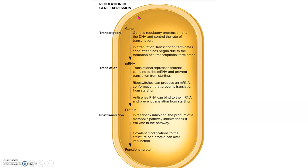We can regulate at several different points. The most energetically favorable is transcription — this is before we even make it. But if we do make it, we can control the rate or we can stop. We can control how much we're making, or we can start to transcribe and then stop. Then we can regulate translation — so we have this mRNA produced, but it doesn't have to become a protein.